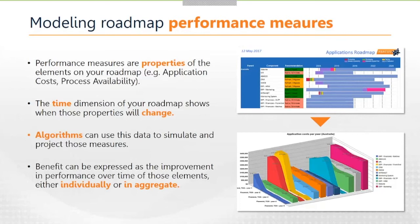In terms of the mechanism for doing that, there's a whole range — you can work with very simple estimates or get quite advanced into deep cost modelling or performance modelling. Fundamentally, each of the elements on your road map — whether a technology or a process — has properties like cost or availability. We have those properties to express performance individually or as an aggregate. The time dimension shows us how those properties change over time. We have a chart at the bottom right where each rollercoaster-looking curve is an individual application's cost over the course of one to five years.